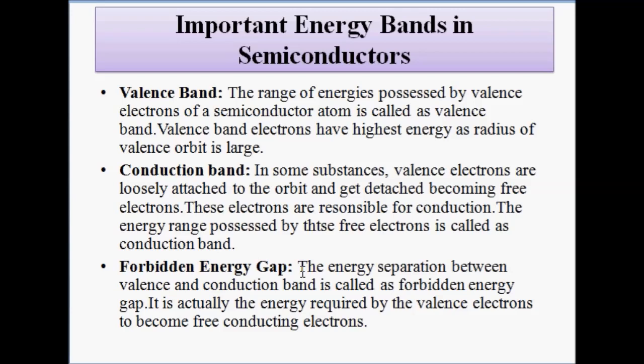The forbidden energy gap is the energy difference or energy separation between the valence band electrons and the conduction band electrons. It is the amount of energy that must be given to valence band electrons so they gain sufficient energy to become free and independent — essentially, it is the energy required to convert valence band electrons into free, conducting electrons.